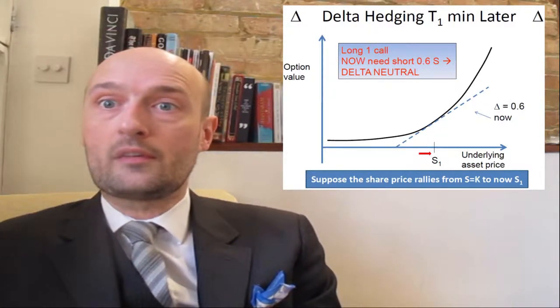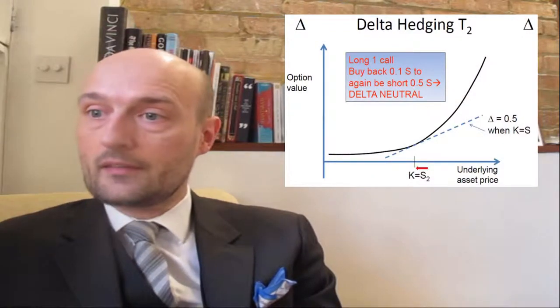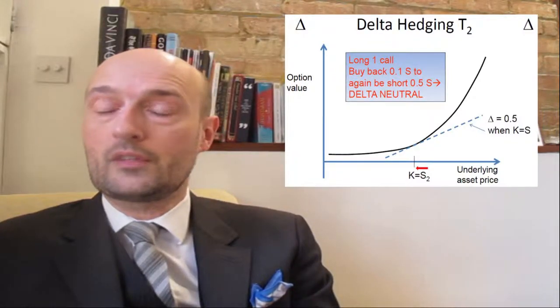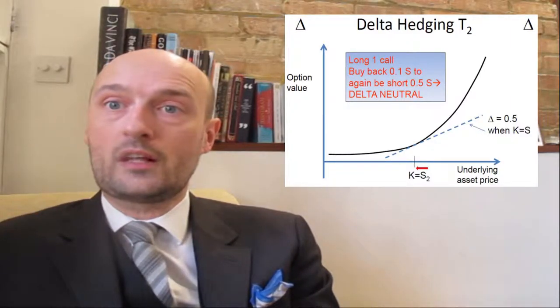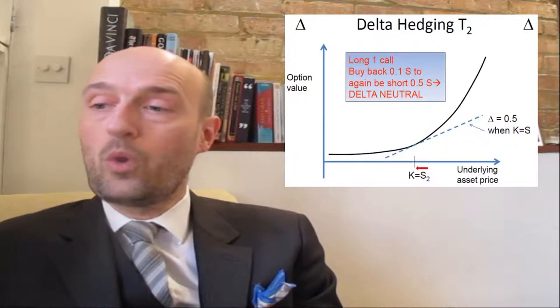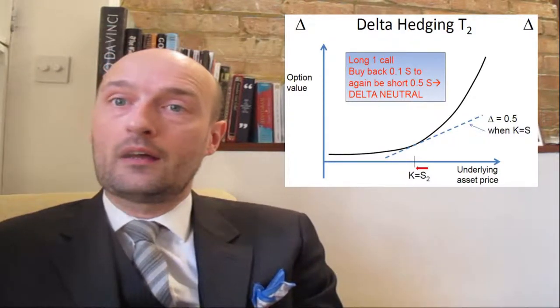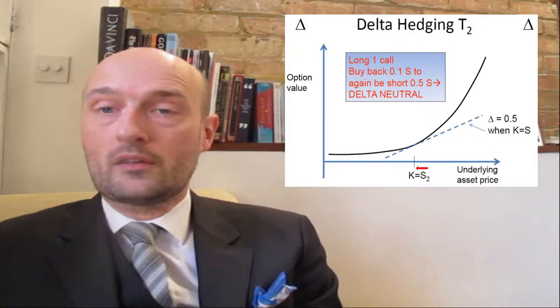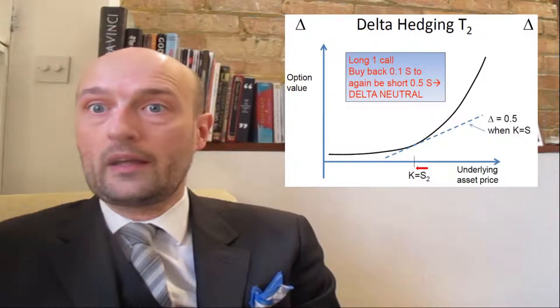This is all we're doing: as the price is rising we're going to find ourselves selling shares, and as the price is falling we're going to find ourselves buying them back. The price then falls right back to where it started — back to the strike price of the option. We calculate our Delta and find it is again 0.5, so we need to be short 50 shares. We buy back 10 shares of the underlying to be Delta neutral again.